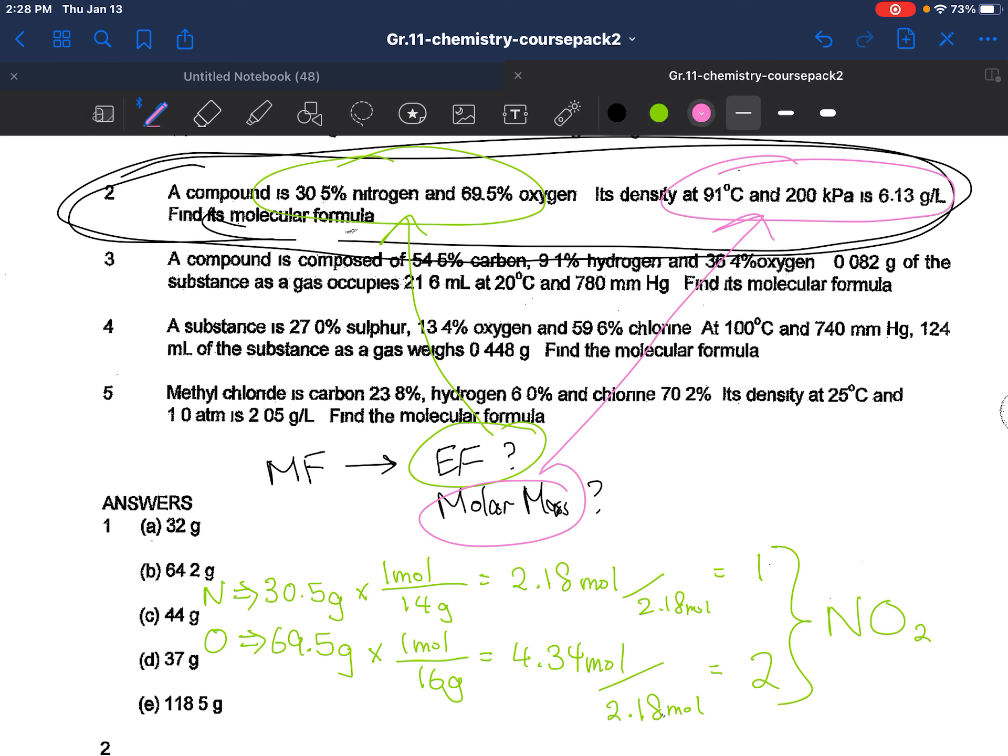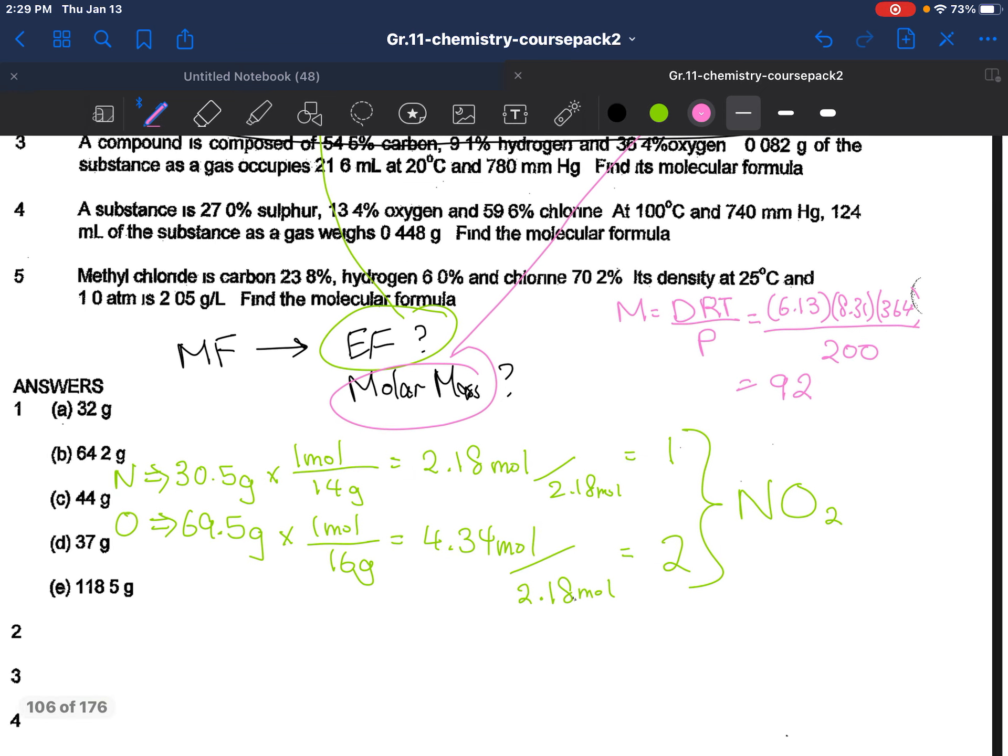There you go. Now I'm going to do molar mass calculation with my brand new equation that I just learned: DRT over P. So the density here is 6.13. Again, make sure you remember that it is in grams per liter and not milliliters. kPa again, so 8.31. And the temperature here is 91 plus 273, so that is 364 Kelvin. All that over 200 is... So 6.13 times 8.31 times 364 divided by 200, and you're looking at a molar mass of 92. Yeah, 92. So let's just round it to our nearest ones.